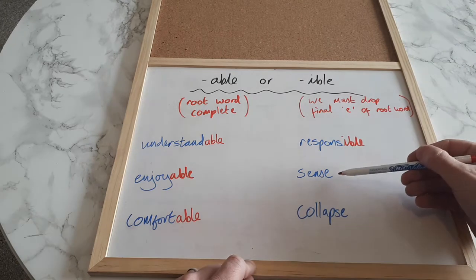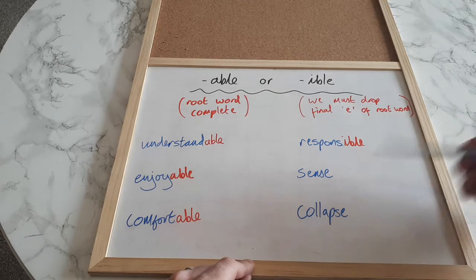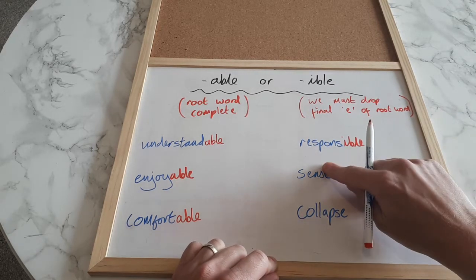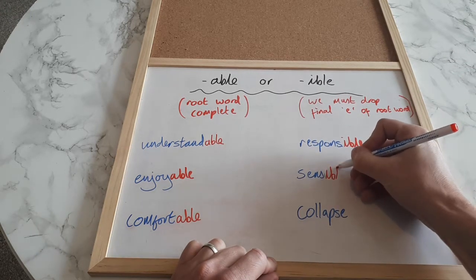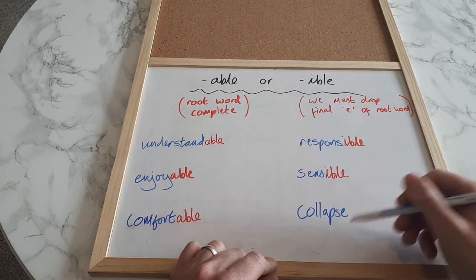So have a look, sensible. How would I, what would I do here to make the word sensible from my root word sense? Yep. I get rid of the e again to get the word sensible, and then collapse.